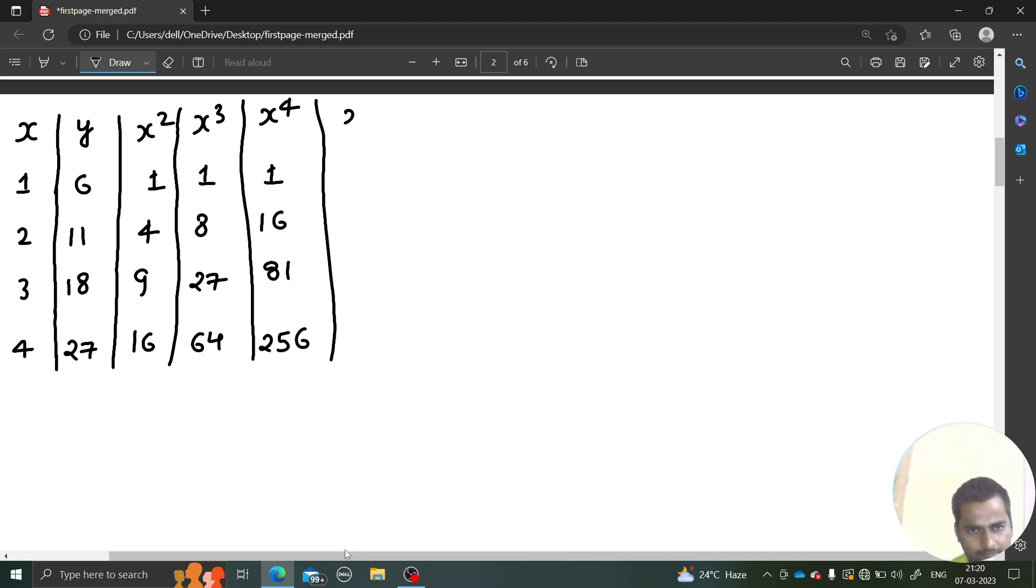Let's cover x y as well. That will be 6, 22, 54 and 108. And finally x square y. It will be 6, 44, 18 into 9 which is 162, and then 27 into 16 which is 432.